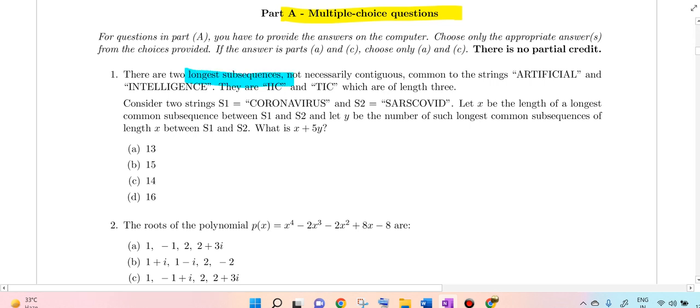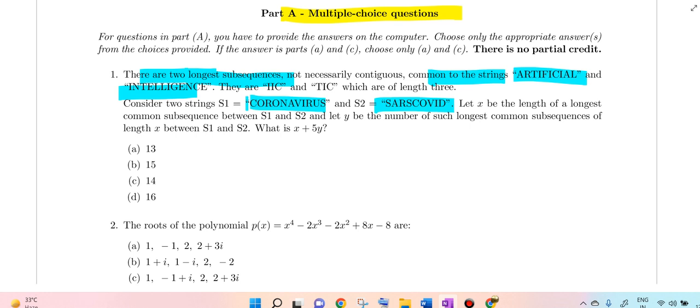There are two longest subsequences, not necessarily contiguous, common to the strings artificial and intelligence: IIC and TIC, which are of length three. Consider the two strings S1 coronavirus and S2 SARS-COVID, where X is the length of the longest common subsequence between S1 and S2, and Y is the number of such longest common subsequences.